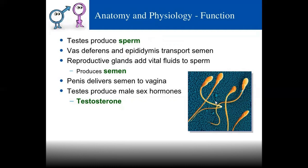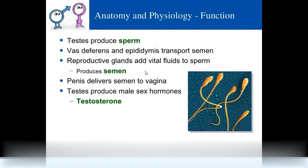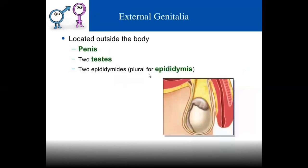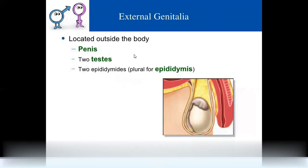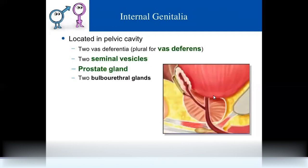The external genitalia are located outside the body. This includes the penis, glans penis, two testes, and two epididymides. After the epididymis comes the vas deferens, and all these structures are located outside the body — these form the external genitalia.